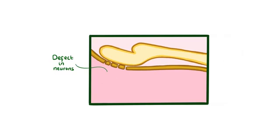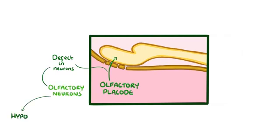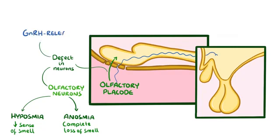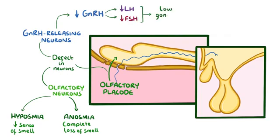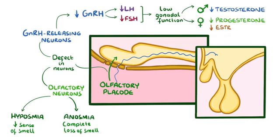In Kallmann syndrome, there's a defect in the migration of neurons coming out of the olfactory placode. That includes the olfactory neurons, which can result in hyposmia — a reduced sense of smell — or anosmia, which is a complete loss of smell. It also includes gonadotropin-releasing hormone neurons, which results in a decrease in gonadotropin-releasing hormone. That leads to low levels of gonadotropin hormones — luteinizing and follicle-stimulating hormone — and low levels of gonadal function. In males, there's a decrease in testosterone, and in females, there's a decrease in progesterone and oestrogen.